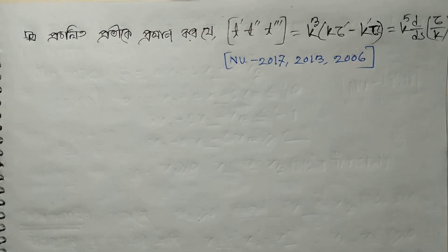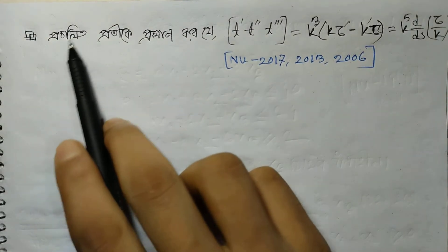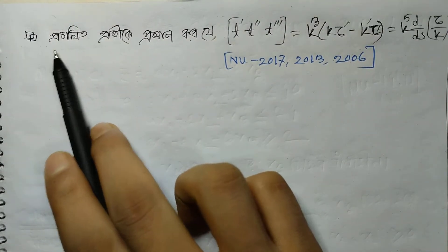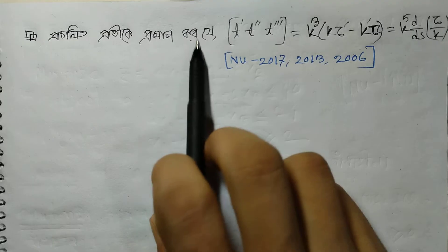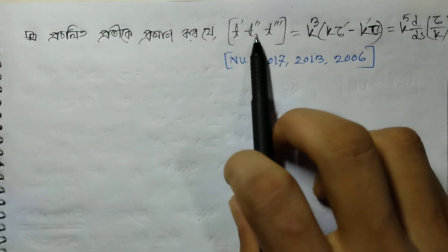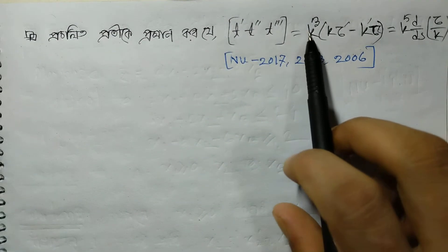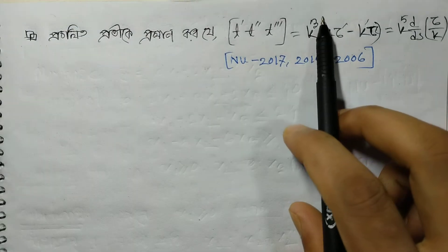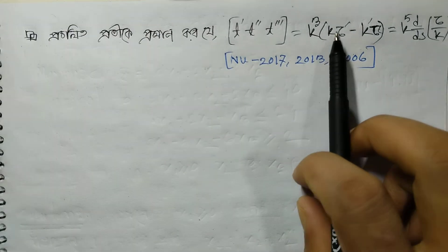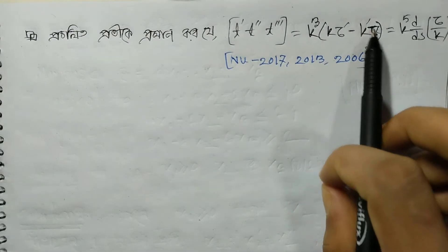This is the third year of the differential geometry subject, which is very important. The first thing we will do is t prime, t double prime, t triple prime equal to kappa cubed into kappa tau prime minus kappa tau.